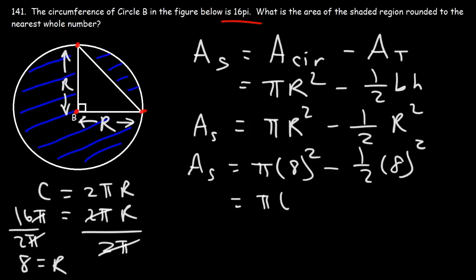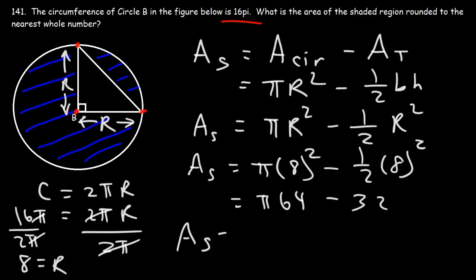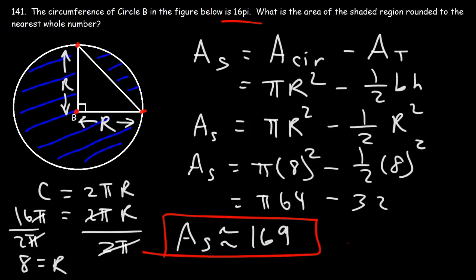Eight squared is 64, and one-half of 64 is 32, so the exact answer is 64π minus 32. Using π ≈ 3.14159265, multiplying by 64 gives 201.06, and subtracting 32 gives 169.06. Rounding to the nearest whole number, the area of the shaded region is approximately 169 square units.